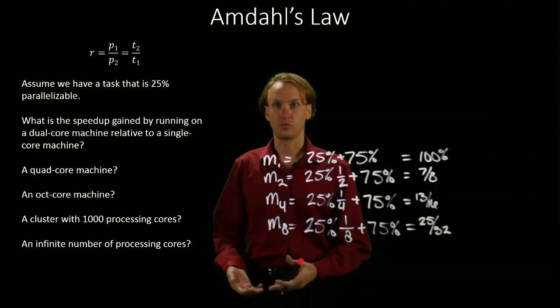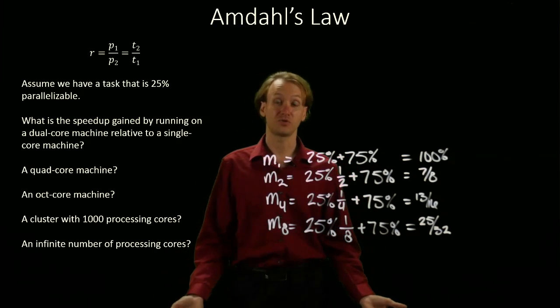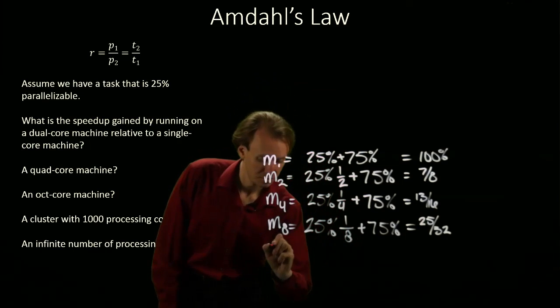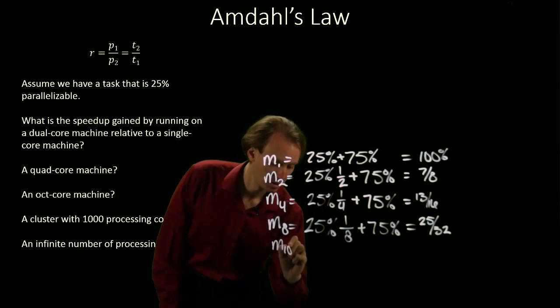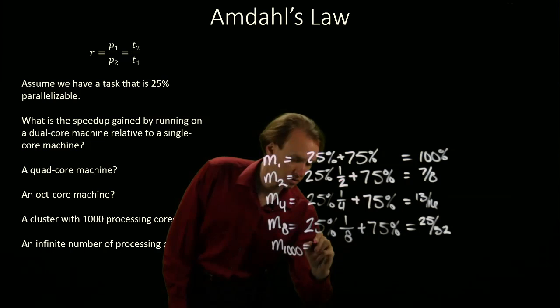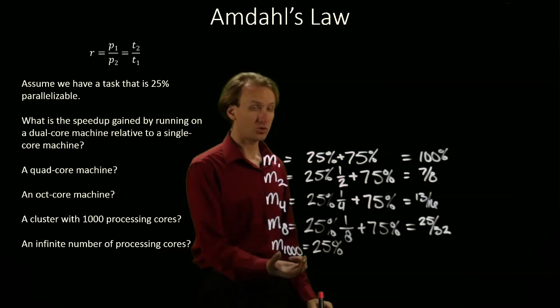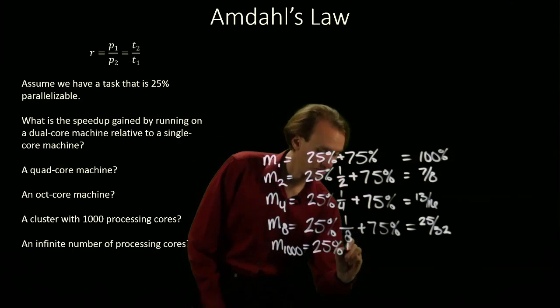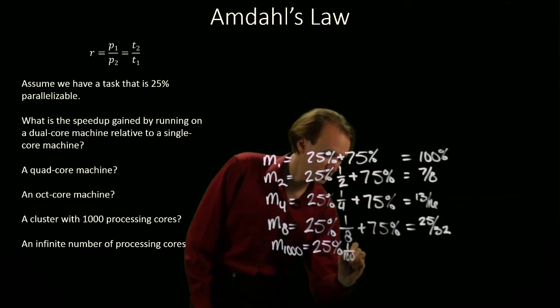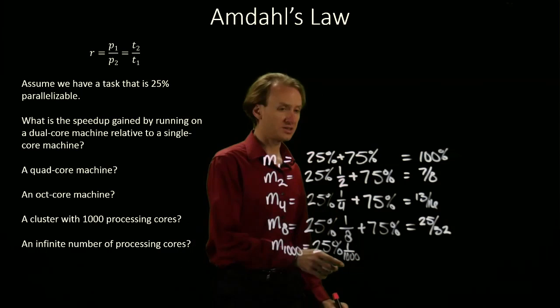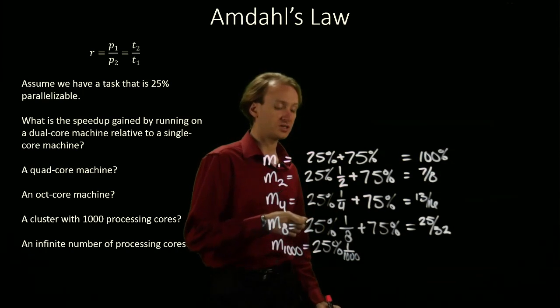Now we'll look at this with a cluster that has 1,000 processing cores. Still 25% of the code is parallelizable. This time, I've got 1,000 cores to run this on, so this part will take 1/1000 the amount of time it did on the single core processor.